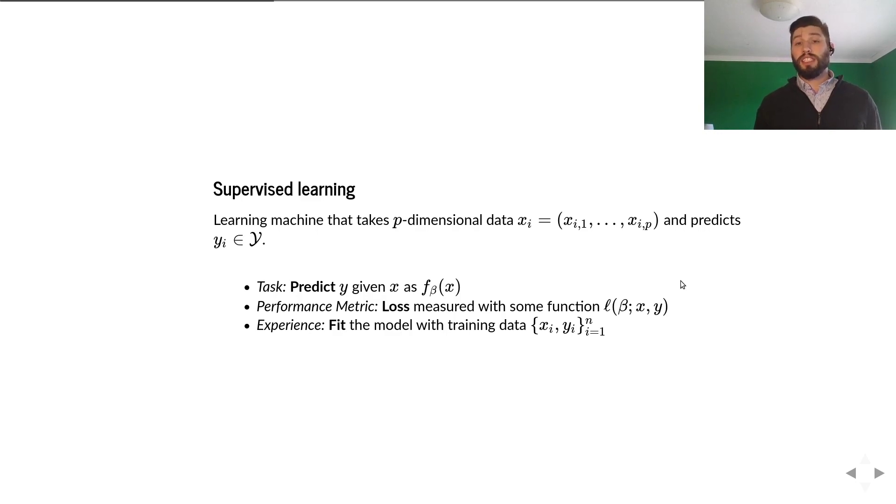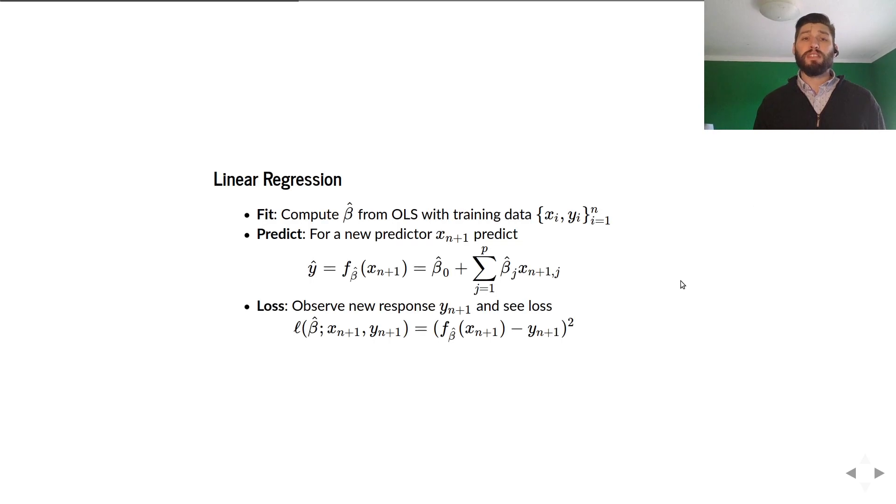So ordinary least squares, you can think of it as taking our training data, which we think of as our experience. It fits the model, which selects our beta. So that's what OLS does. And then when we go to our test dataset, we are going to measure the performance of our fit using our notion of loss, which is typically square error loss for regression.